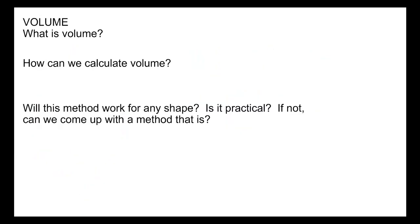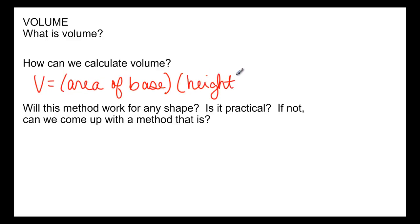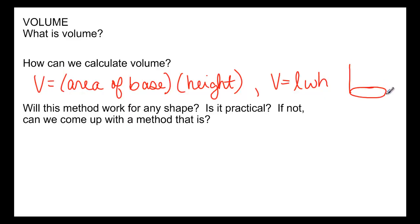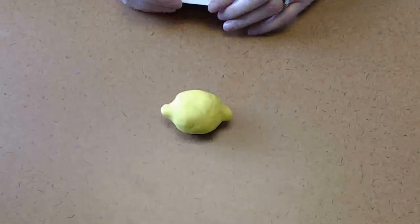So what have we learned? We can calculate volume by multiplying the area of the base times the height, or length times width times height. The problem with both of these formulas is they make an assumption — they assume you have some fixed base that you're just stretching out, and that if you slice this object anywhere along the way you'd get the same base. That's not always true, so we need a method that works even when slices give different areas.